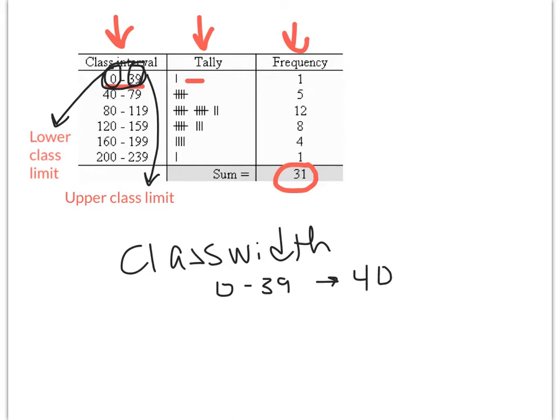If you think about it, you're saying, well, 39 minus 0 is 39. So there's 39 numbers represented in that class. But you have to account for the fact that 0 is a number as well. So you have to add the value of 0 as one of those possible numbers that could be in the range.